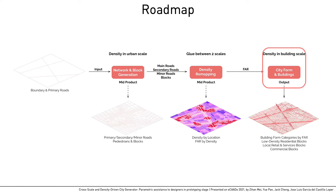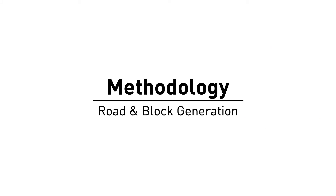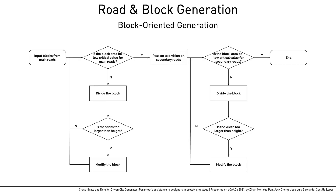The third step generates forms of buildings within each block according to the FAR from step 2 and BCR. FAR defines the building typologies, while BCR defines the height and additional towers. As the first step, road and block generation takes in a boundary with the main roads and returns roads in three classes and blocks. Initial blocks from the boundary and main roads are divided by secondary roads in a loop until a critical value set by the user, and similarly with minor roads until another critical value.